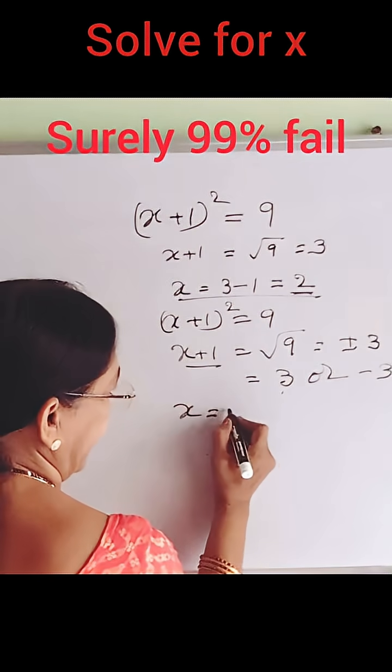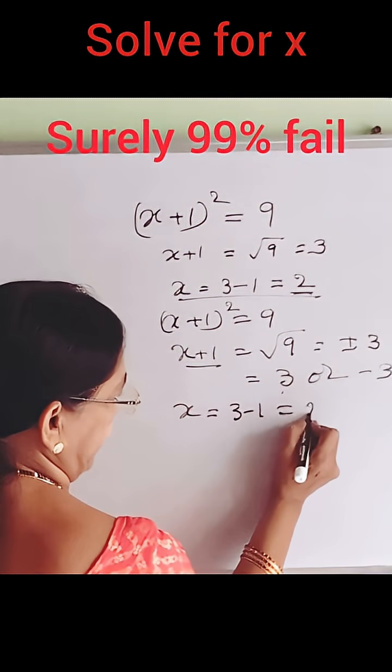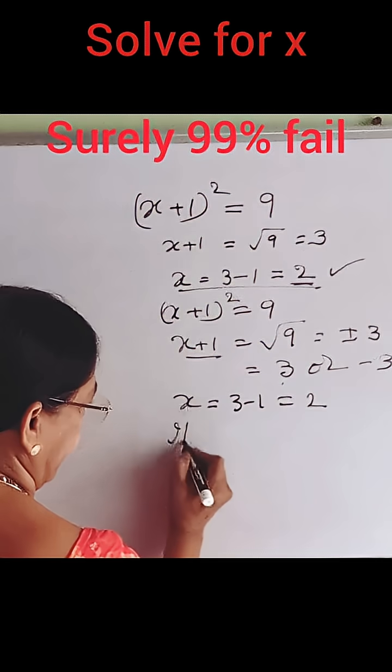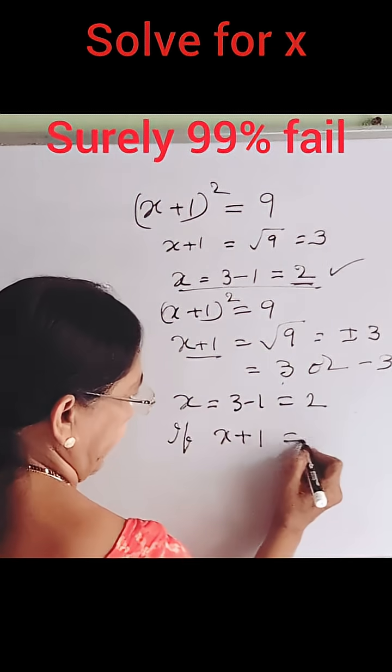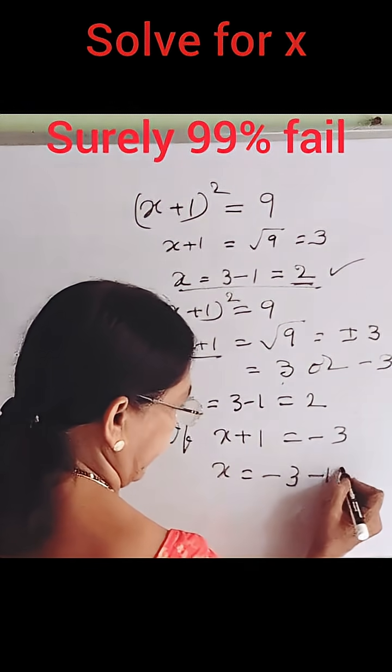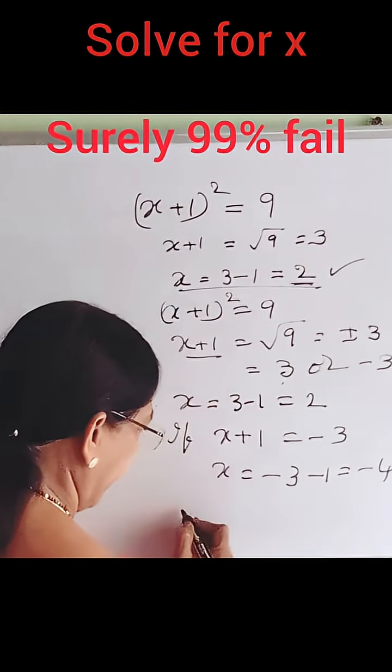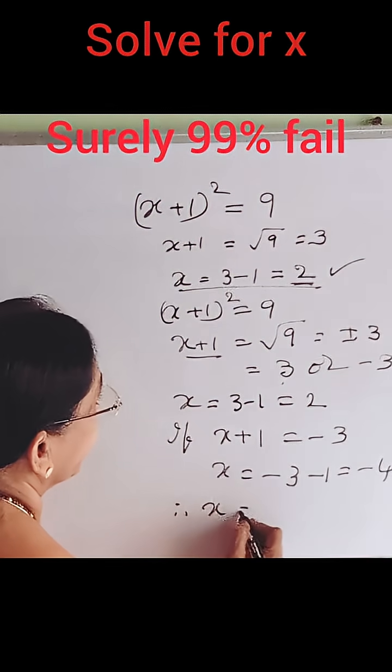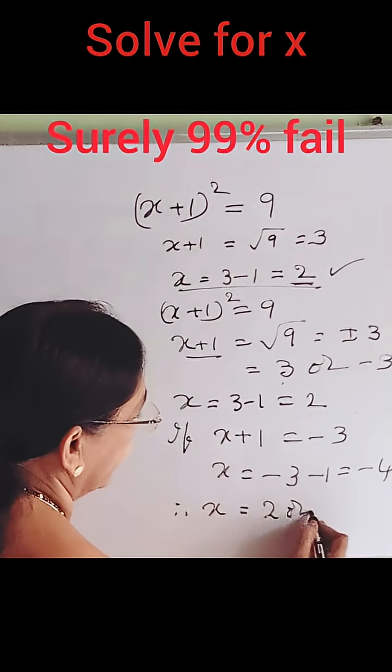x plus 1 is equal to 3. x is equal to 3 minus 1, that is equal to 2. That is same as x plus 1 is equal to minus 3. x is equal to minus 3 minus 1, that is equal to minus 4. Therefore, x is equal to 2 or minus 4.